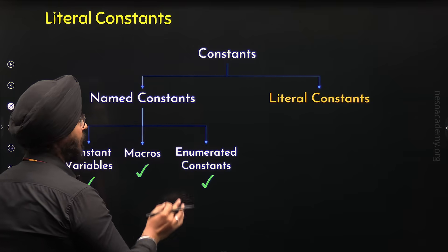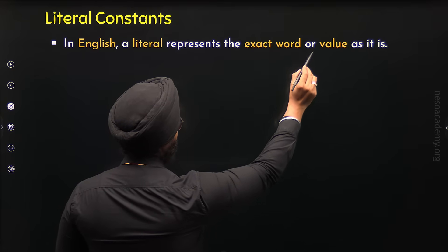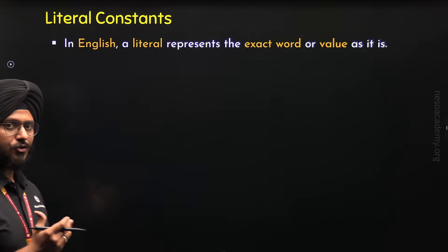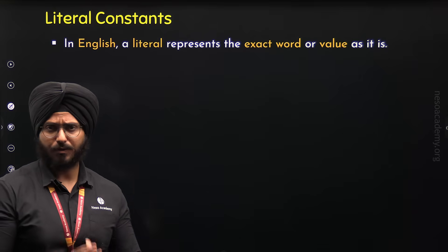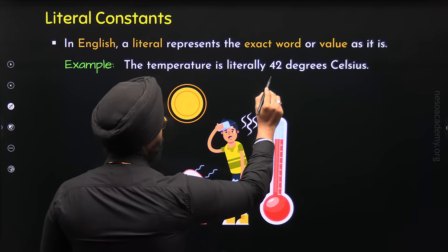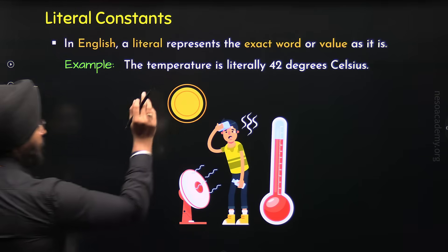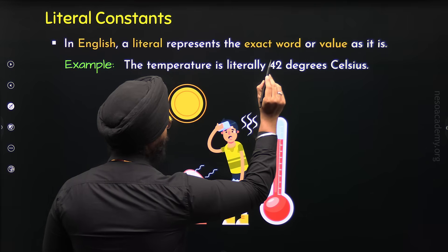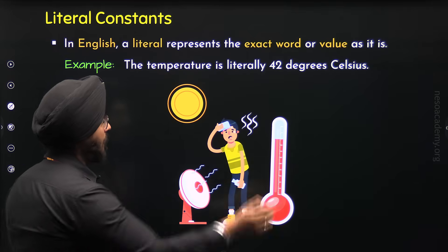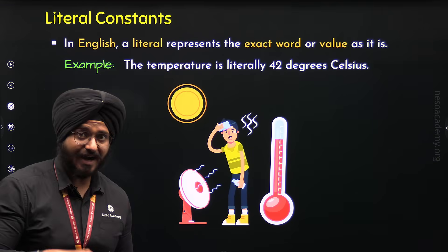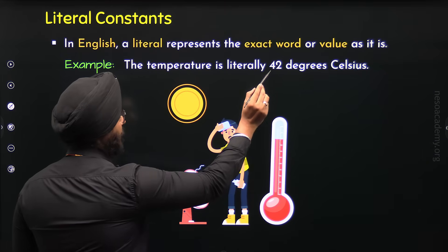First I will give you the English meaning of a literal or a literal constant. In English, a literal represents the exact word or value as it is — a literal represents a fixed value or a word. Here is an example: 'The temperature is literally 42 degrees Celsius.' This means the temperature is exactly 42 degrees Celsius. The speaker is not exaggerating the temperature; this is the exact temperature right now.